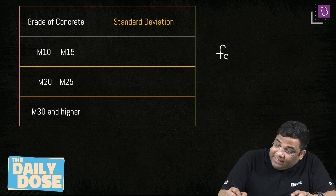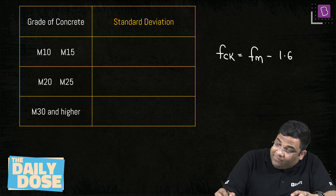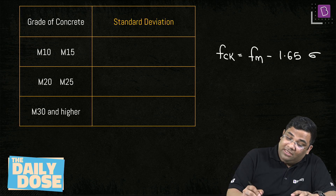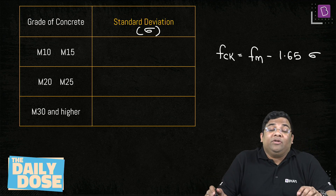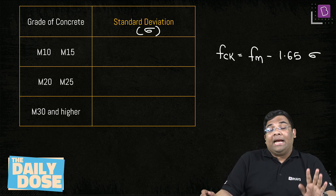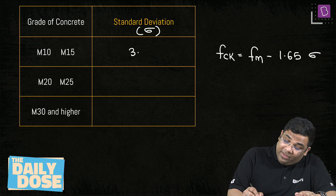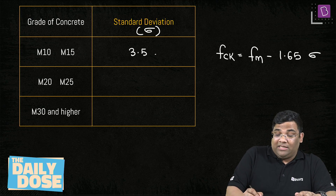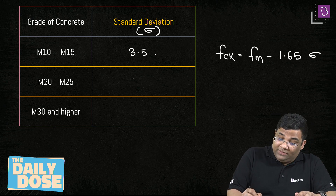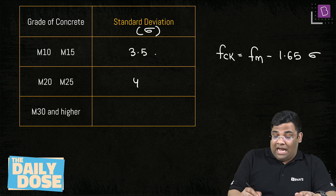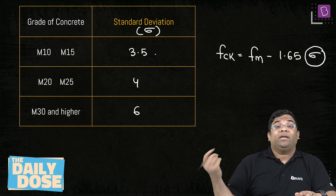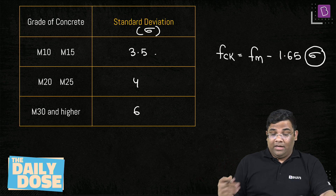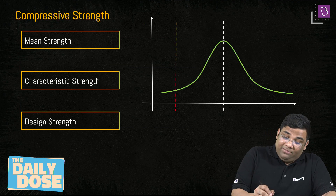The formula is: FCK = FM − 1.65σ, where σ is the standard deviation. Standard values of σ to remember: for M10 and M15, σ = 3.5; for M20 and M25, σ = 4; and for M30 and higher, σ = 6.